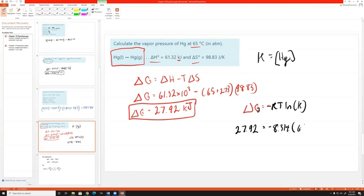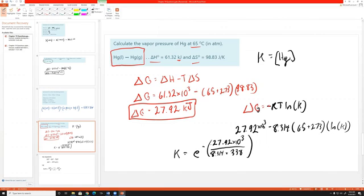So we do 27.92 equals negative 8.314 times your temperature, which is 65 plus 273 times natural log of K. Then we can solve for natural log of K and solve for K. I'll just write the expression for that. E to the negative 27.92 times 10 to the third. And remember, put a times 10 to the third there, divided by 8.314 times, and what's 65 plus 273, that would equal 338. And we do E to the negative that. And that will give us our answer, which should be 4.8 times 10 to the negative fifth.